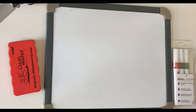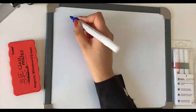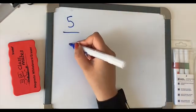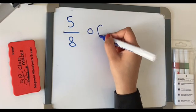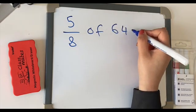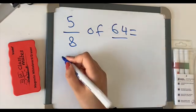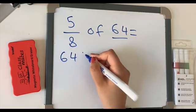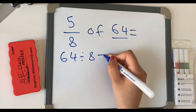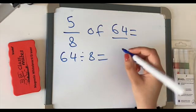Let's have a look at one more example. Let's do five-eighths of 64. So the same rule applies once again. We take our 64. We divide that by 8.